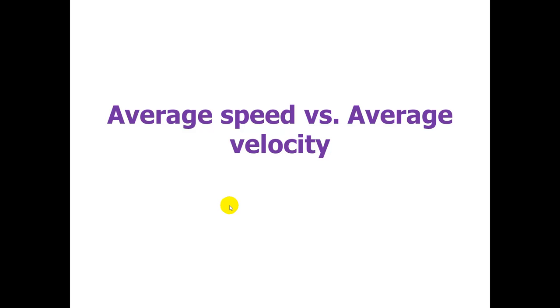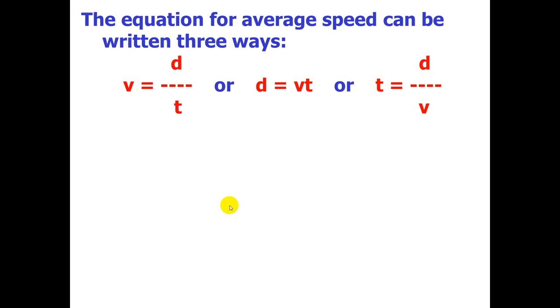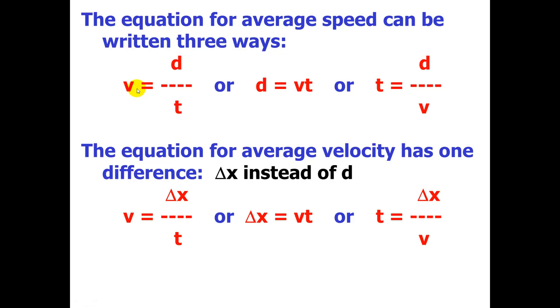Lastly, let's take a look at average speed versus average velocity. The equation for average speed can be written three ways. And here are those three ways in red. The one that we're most commonly used to seeing is v equals d over t. And I'll point out that v can represent speed or velocity. But, you can simply cross-multiply this equation, and now you have distance equals speed times time. Or, now you can divide both sides of the equation by v and get time by itself. Time equals distance divided by speed. So, there are three ways of writing the equation for average speed, depending on which of the three variables you want to isolate. The equation for average velocity has one difference. We're using displacement, delta x, instead of d. So, that's all we did. We went back to the equation, and we just made that substitution. But, there is a fundamental difference here.